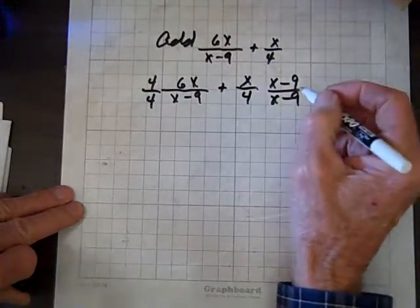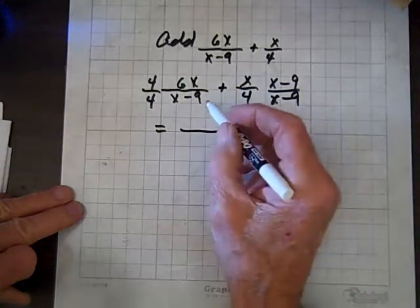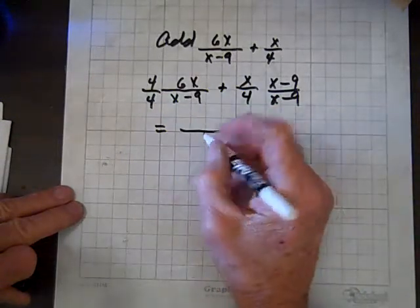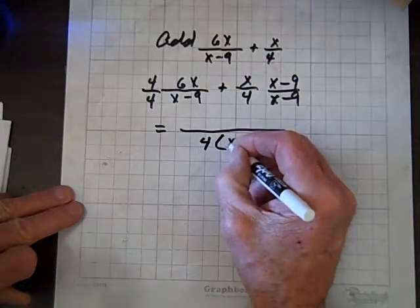As a result, we get that common denominator because since they're relatively prime, the common denominator is the product of 4 and x minus 9.